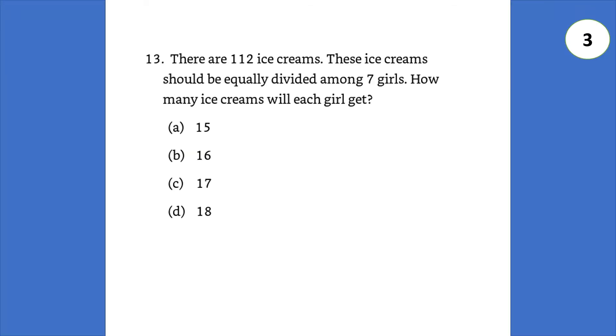There are 112 ice creams. These ice creams should be equally divided among 7 girls. How many ice creams will each girl get? So, it's 112 divided by 7. So, answer is 16.